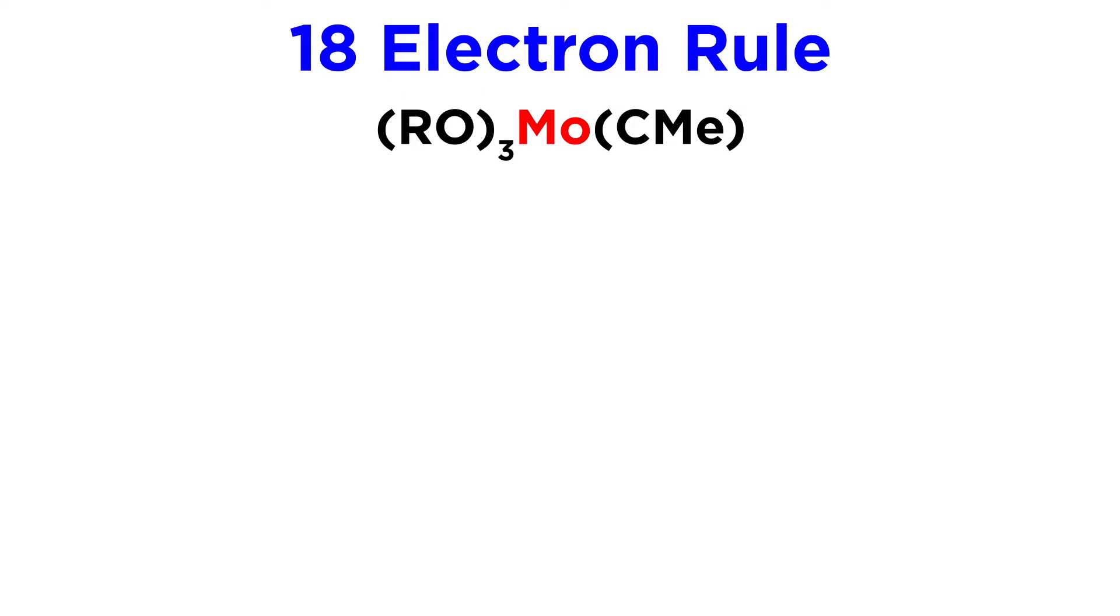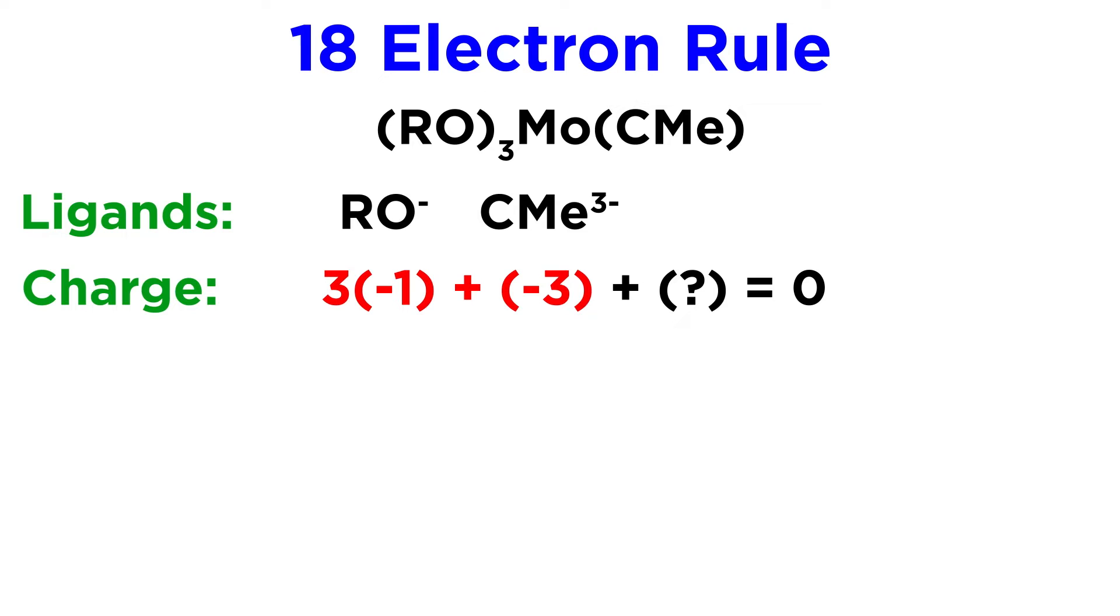Now let's try this molybdenum complex. Here we see how important it is to have the common ligands memorized, as for some students it may not be entirely clear what these are, what their charges are, or how many electrons they donate. RO refers to an alkoxide ligand, and there are three of these. And CME refers to an alkylodyne ligand, so this is a three minus charge. That's a total of six minus from the ligands, and since this is a neutral complex, the molybdenum atom must be six plus.